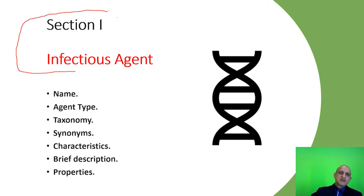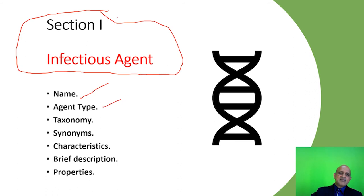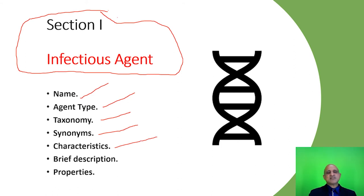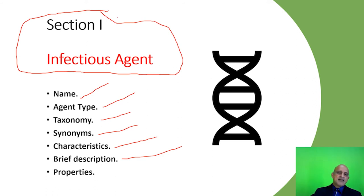Section 1 focuses on the infectious agent: the scientific name, the agent type — whether it is a virus, bacterium, fungus, or prion — the taxonomy in terms of nomenclature and classification, synonyms and common names, the characteristics of the biological agent in terms of its culture characteristics and requirement for a specific medium, a brief description of the biological agent and its life cycle, and the properties of the infectious agent relating to its behavior outside of the host.